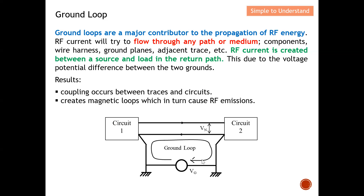As long as current can flow, we know there will be a slight difference in potential. From a DC perspective — when they have the same voltage, no current flows, but once there's a slight difference in voltage or potential, current will be able to flow. Once we induce a noise source onto this ground loop, it can flow and become a potential issue. The result is that coupling occurs between traces and circuits, creating a magnetic loop which in turn causes RF emissions — making this a significant EMC issue.